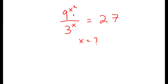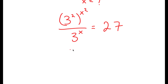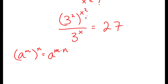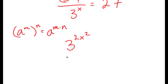What I'm first going to do is rewrite 9 as 3 squared. So I get 3 squared to the power of x squared over 3 to the power of x is equal to 27. Now, if I have something in the form a to the power of m to the power of n, this equals a to the power of m times n. So 3 squared to the power of x squared equals 3 to the power of 2x squared. And I have this over 3 to the power of x, which equals 3 to the power of 2x squared over 3 to the power of x, equal to 27.